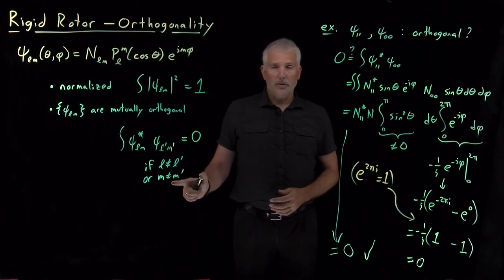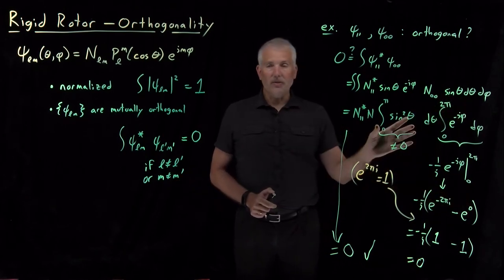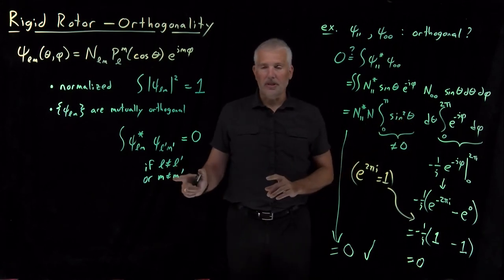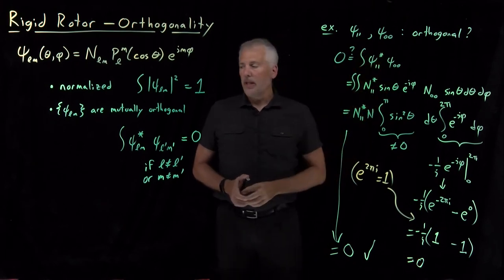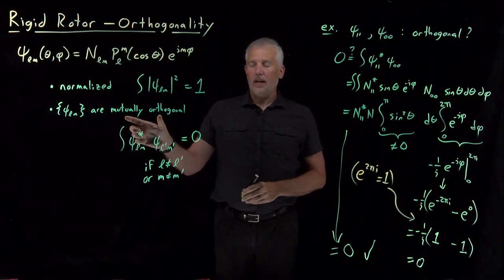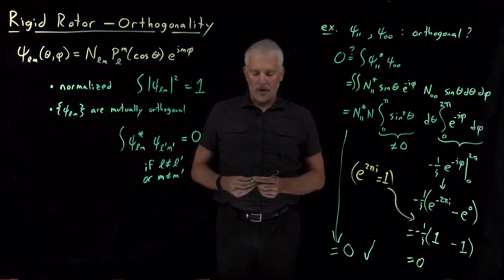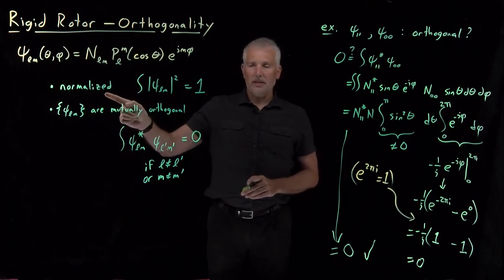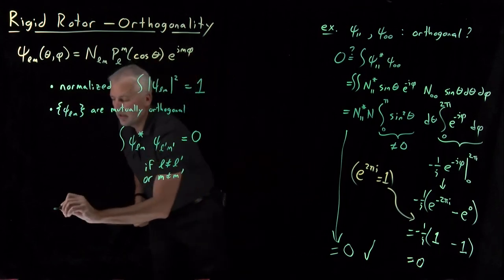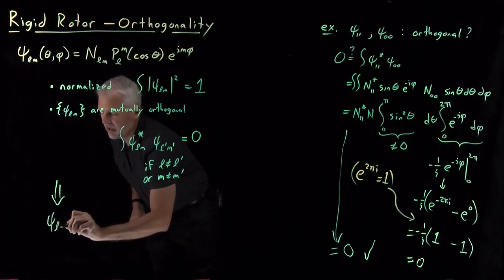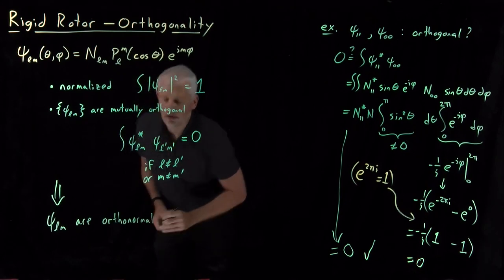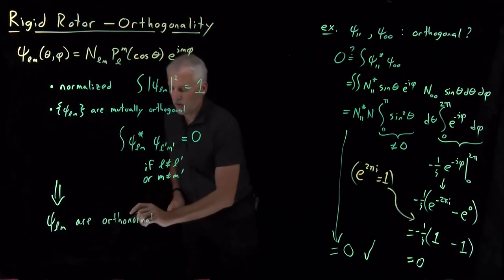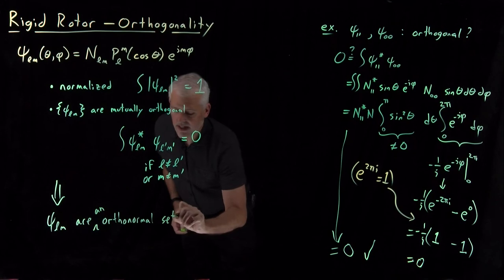If M does happen to equal M prime, then the phi integral won't be 0, but the L part of the integral will be. So any time either quantum number is different for the two wave functions, the overlap integral works out to be 0, and every pair of different rigid rotor wave functions is orthogonal. Since all wave functions are both normalized and mutually orthogonal, we say they form an orthonormal set.